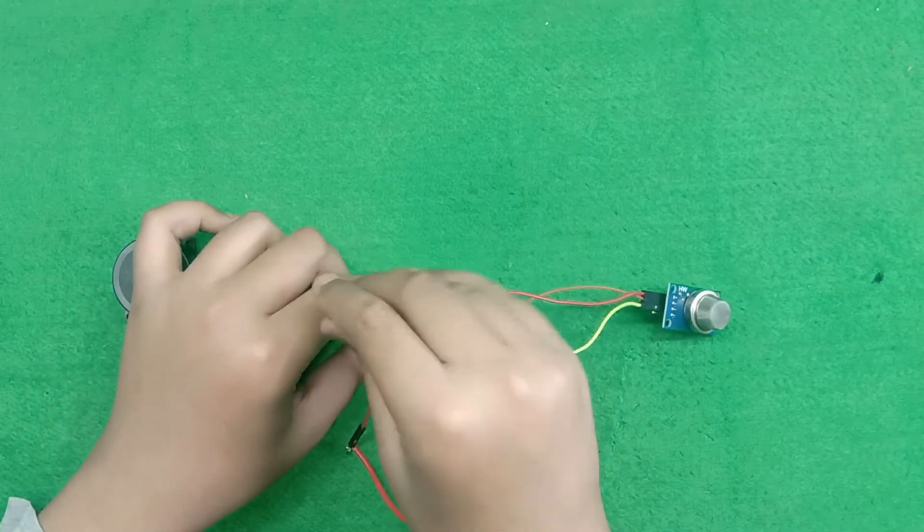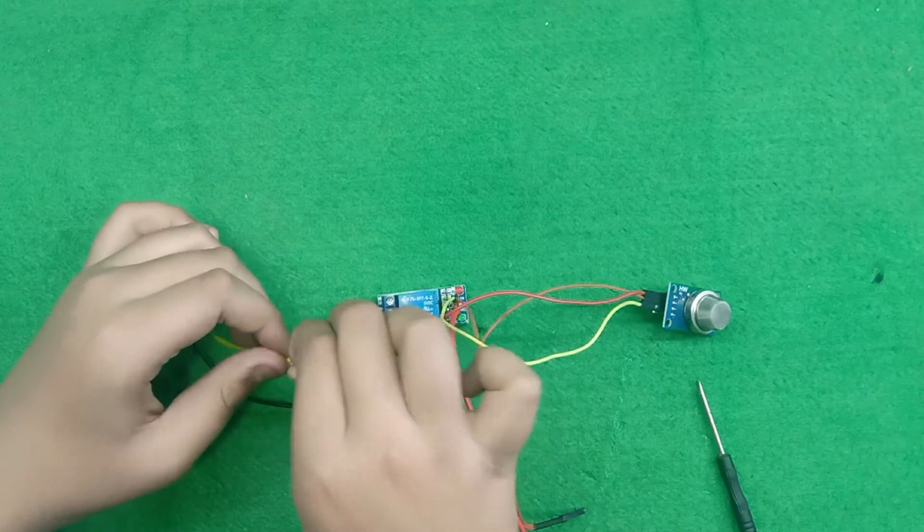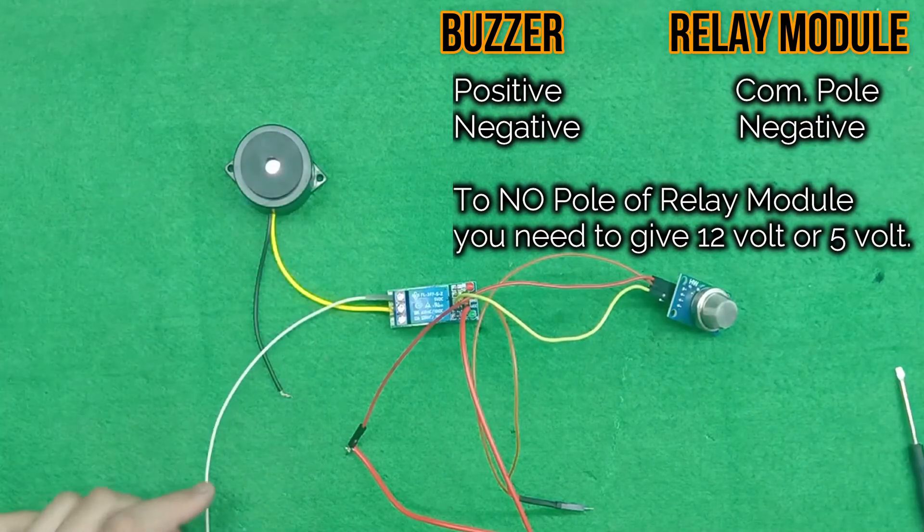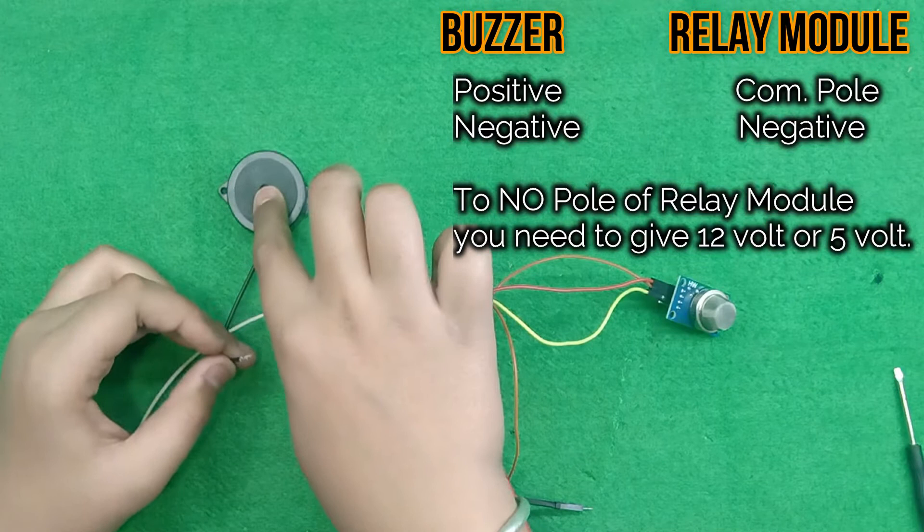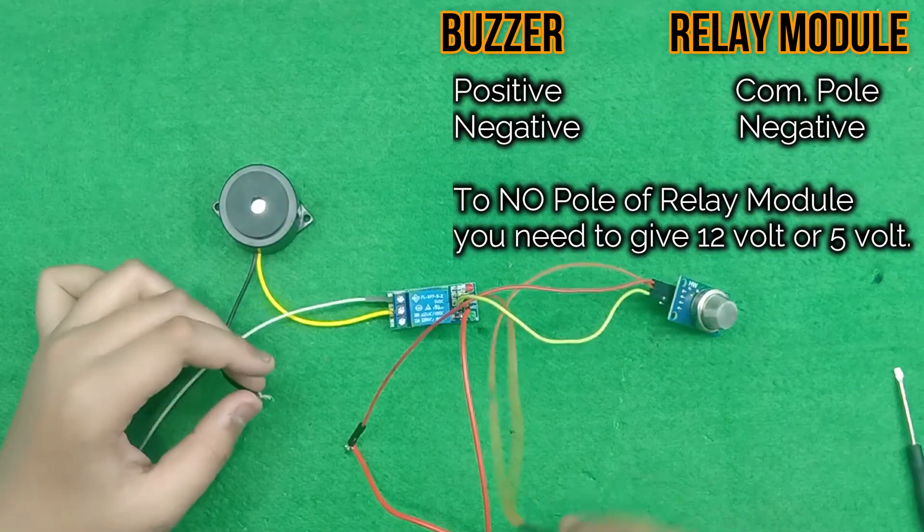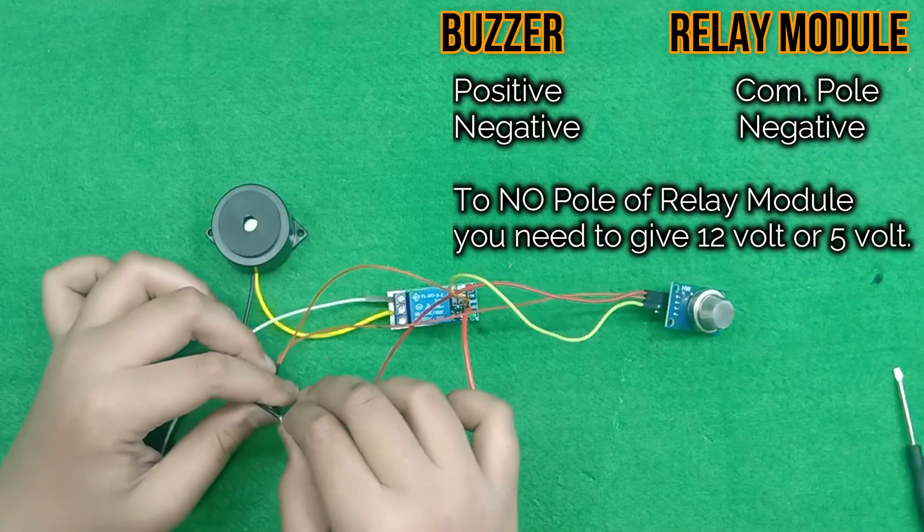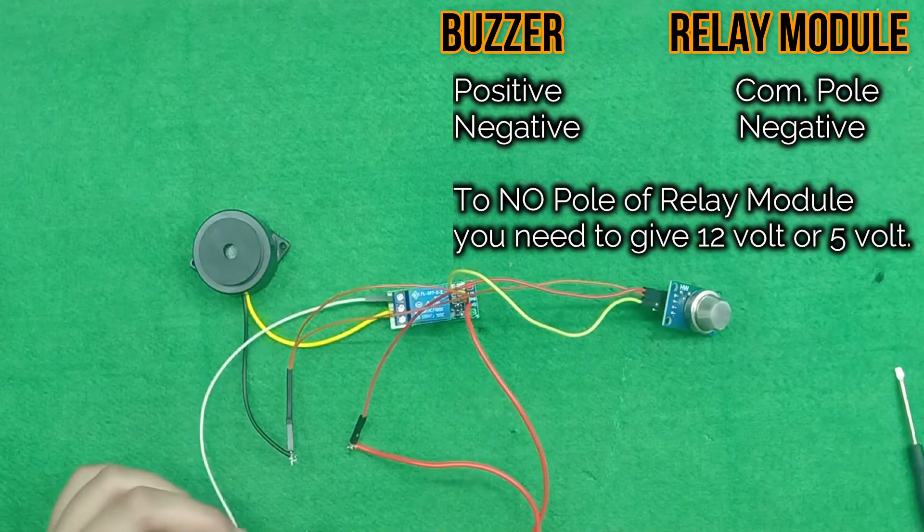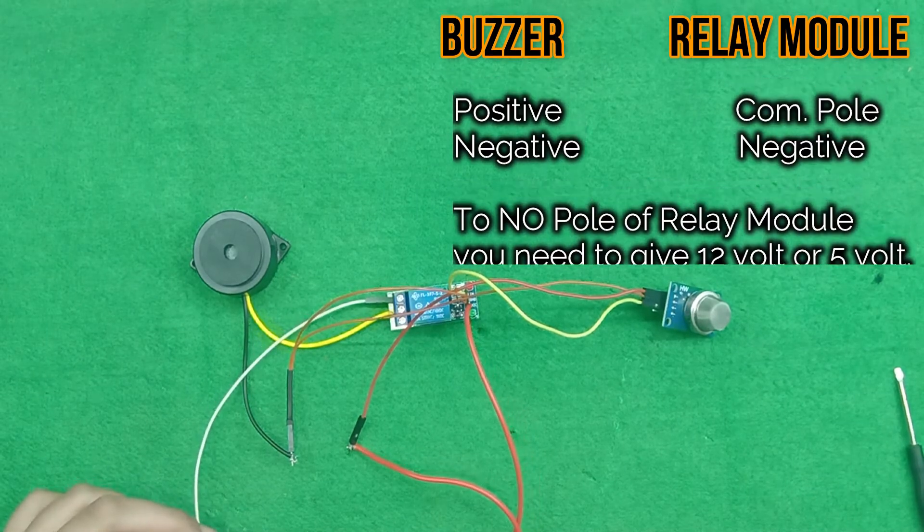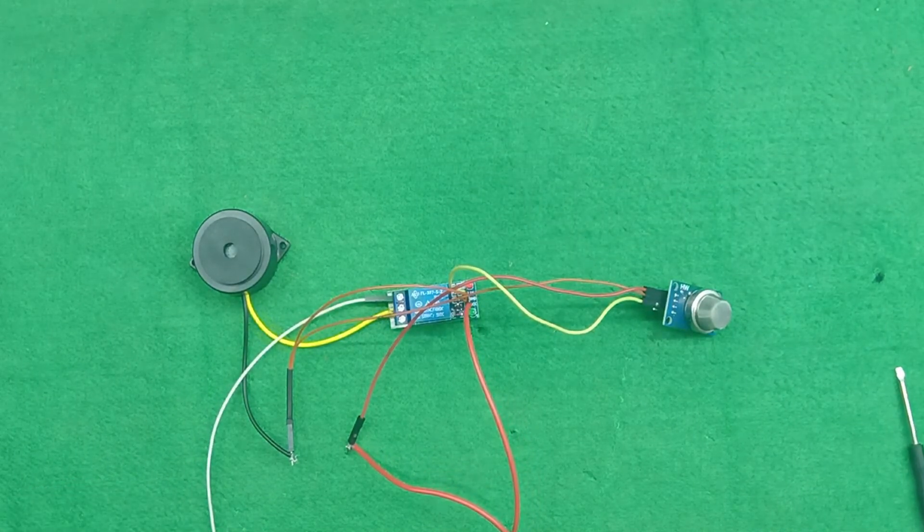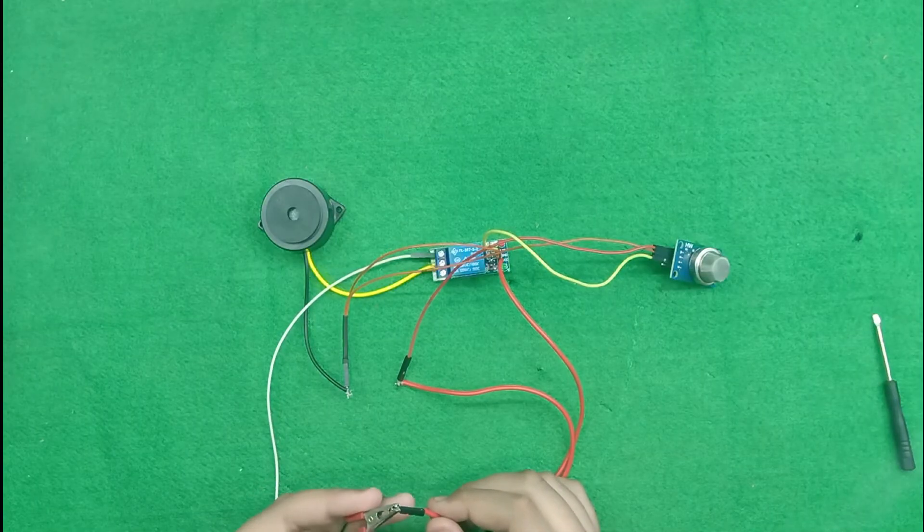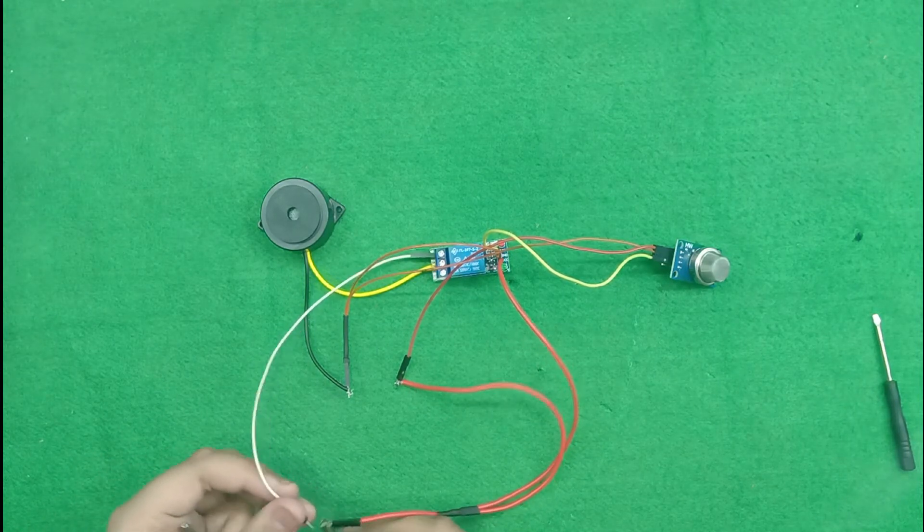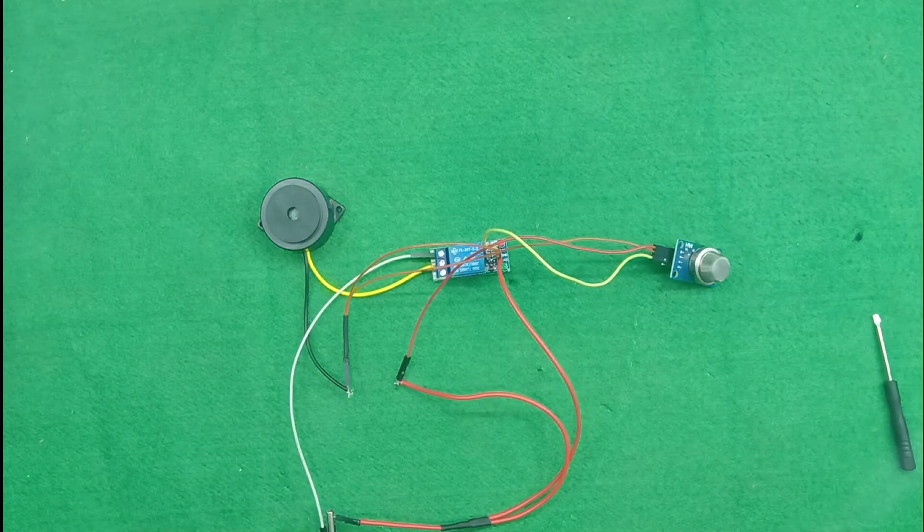The positive goes in the middle one. Now, the ground of buzzer is directly given to the ground of this circuit. And the NO positive of relay module is given to the positive of circuit. So, now, let's join the 5V charger, and then ground to the ground.